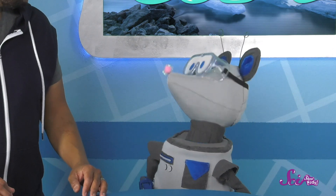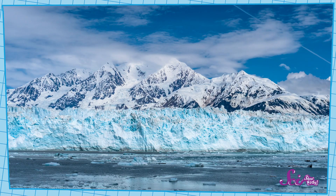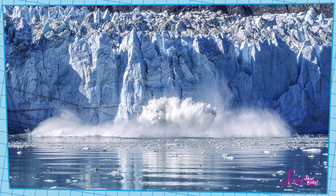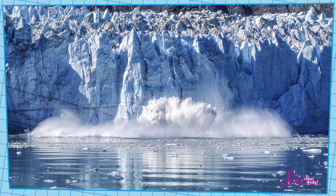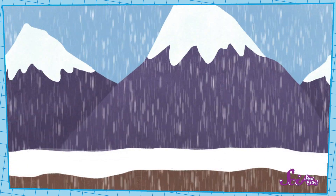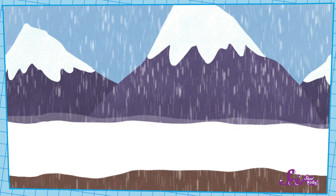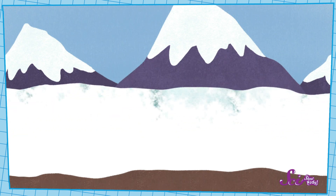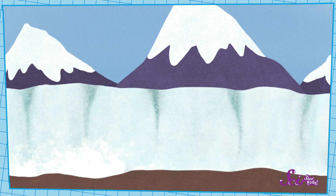We've talked about glaciers here at SciShow Kids before, so you might remember a bit about them. Glaciers are kind of like giant ice cubes on Earth. You can find them in places where it's so cold the snow doesn't even fully melt away in the spring. They form when a lot of snow falls in the same place every year and gets packed down over a long time, sometimes more than a hundred years. Eventually, the packed snow freezes into ice.